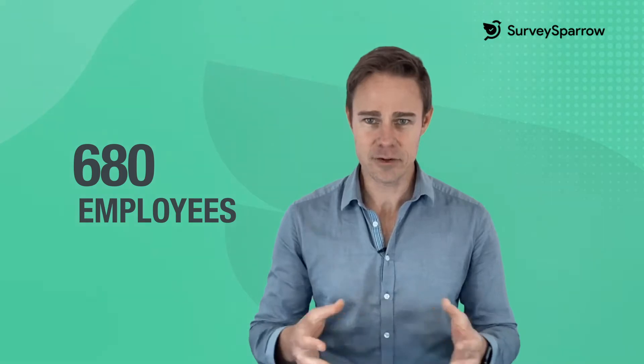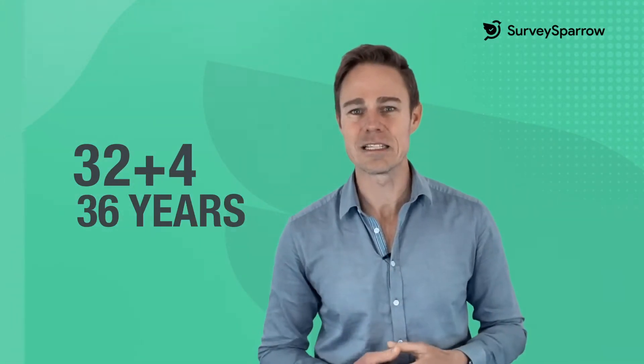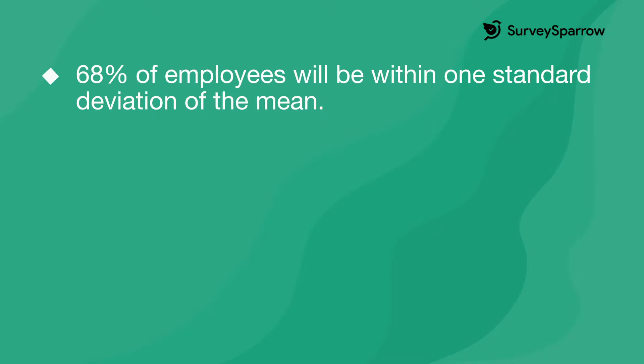Using the standardized normal distribution, we can conclude that 68% of a thousand — that's 680 employees — will be within the age range of 32 minus 4, which is 28 years, and 32 plus 4, which is 36 years. In other words, 68% of employees will be within one standard deviation of the mean.